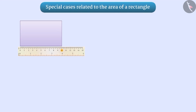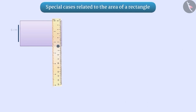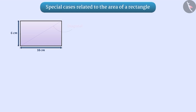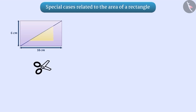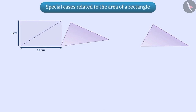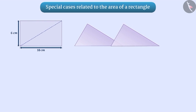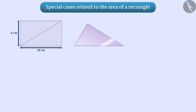Take a rectangular piece of paper of length 10 cm and breadth 6 cm. Cut a rectangle along its diagonal to get two triangles. Superimpose one triangle on the other. After adjusting, you will find that they cover each other completely.